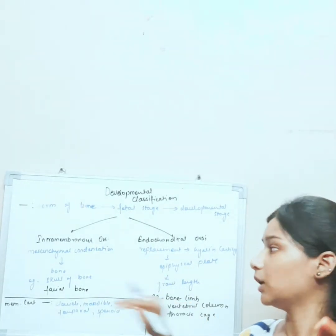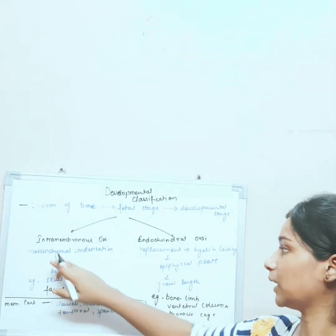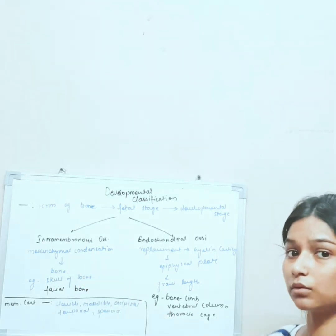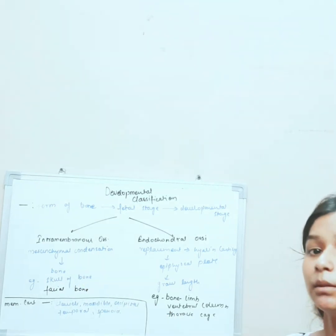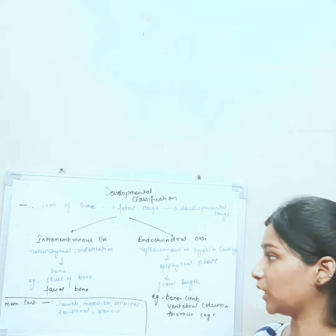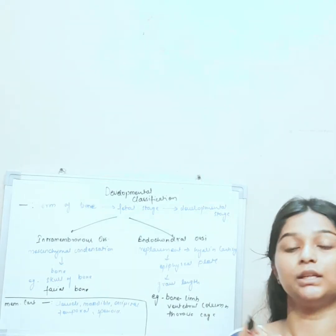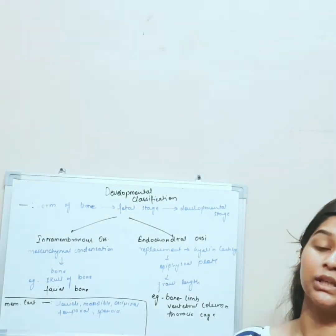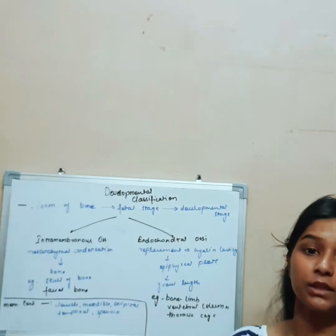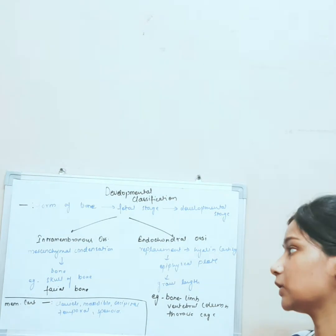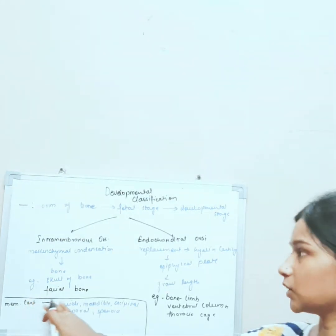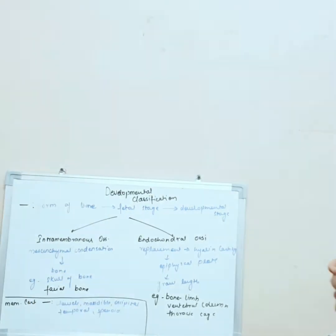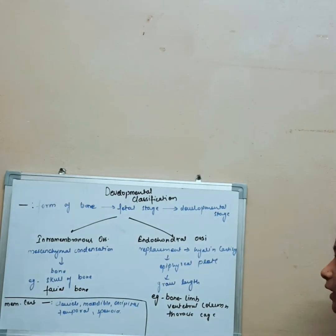Intramembranous ossification is that kind of ossification in which there is mesenchymal condensation — the mesenchymal membrane will directly convert into bone with the help of mesenchymal condensation. Examples of intramembranous ossification are the bones of the skull and facial bones.